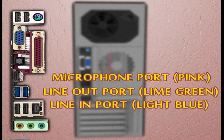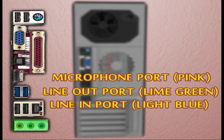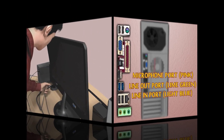Line output port: which is lime green in color, often referred to as a line out jack or audio output jack, is a hardware interface found on computers. This port is designed to accept external audio signals, allowing the device to receive audio input from external sources such as microphones, musical instruments, cassette players, CD players, and other audio devices. Now, how to connect these different devices and assemble a computer system?